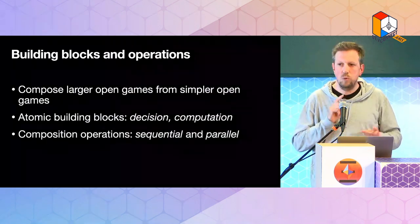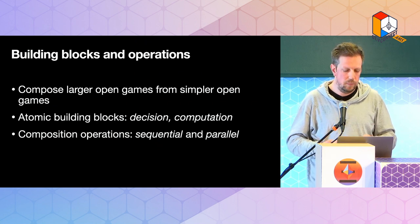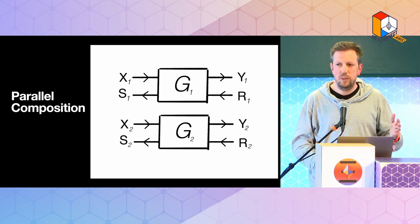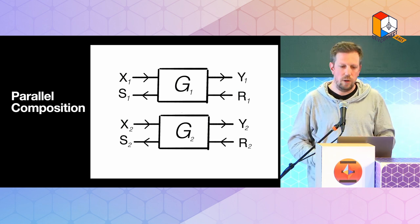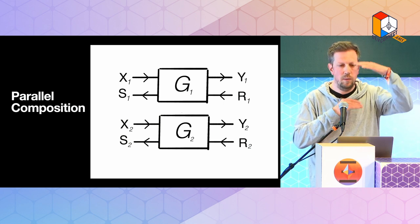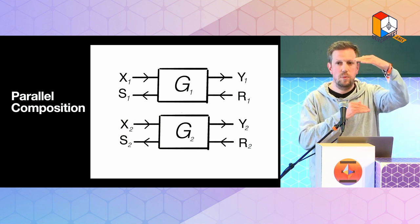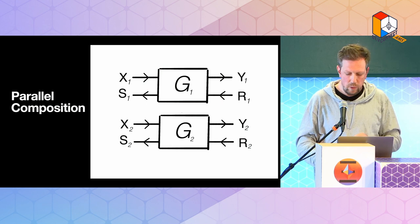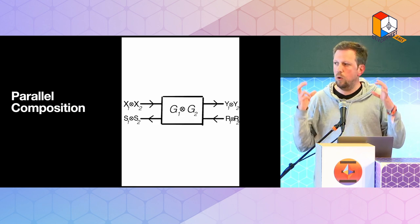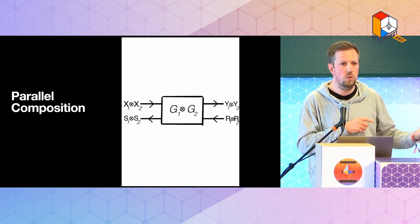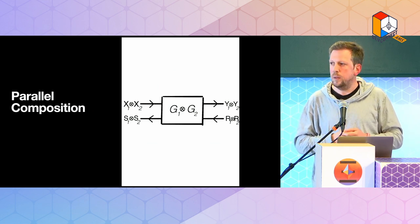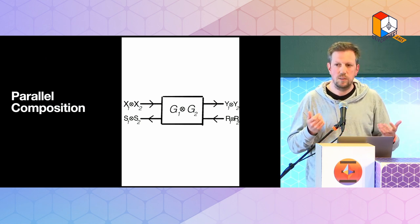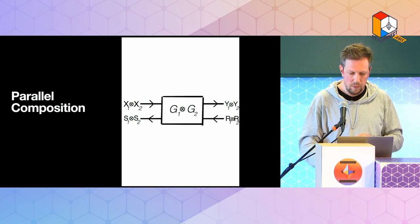We have two composition operations: sequential and parallel. Parallel composition means simultaneous composition — two games G1 and G2 happen in parallel on the plane with no direct connection. They can have different inputs and different outputs, but there is a way to combine them into a new open game with the same basic unit shape.